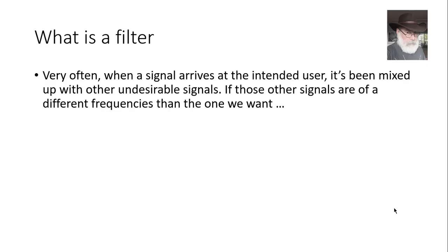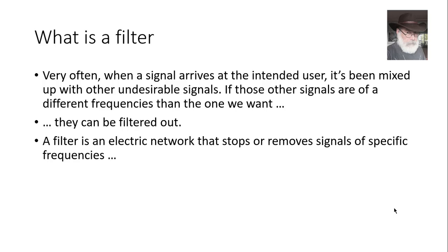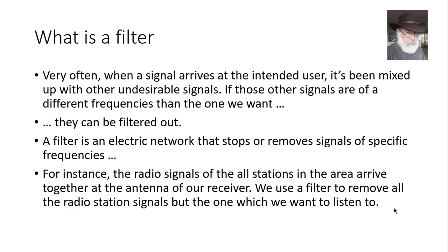What is a filter? Very often when a signal arrives at the user, it has been mixed up with other undesirable signals. Those other signals are of a different frequency than the one we want. They can be removed — they can be filtered out. The network that does the filtering is called an electric or electronic filter. It stops or removes signals of specific frequencies.